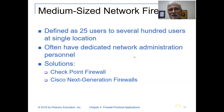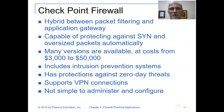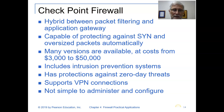For a medium-sized network firewall, it's suitable for anything larger than 25 users and up to 700 users at a single location. You often have dedicated administrators working on this. A couple of solutions to consider are Checkpoint Firewall or Cisco Next Generation Firewalls. The Checkpoint Firewall is a hybrid packet filtering application gateway. It can protect against SYN and oversized packet attacks automatically. It's a little pricey at $3,000 to $50,000, includes intrusion prevention systems, offers protection against zero-day threats, supports VPN, but is not simple to administer or configure.